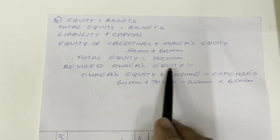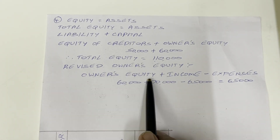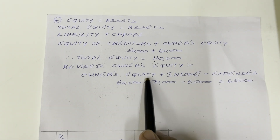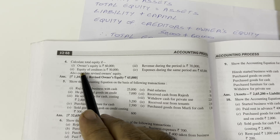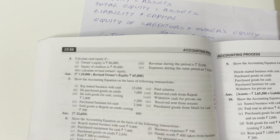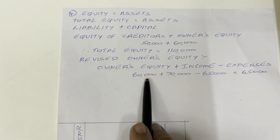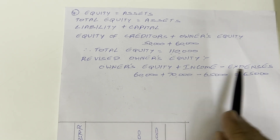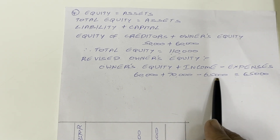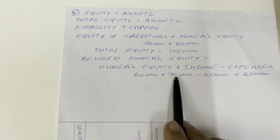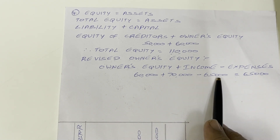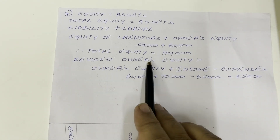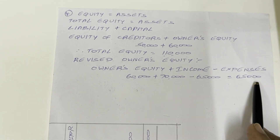So revised owner's equity becomes owner's equity plus income minus expenditure. Owner's equity given in the question is 60,000 rupees. So: 60,000 plus income 70,000 minus expenditure 65,000 equals 65,000. So revised owner's equity is equal to 65,000.